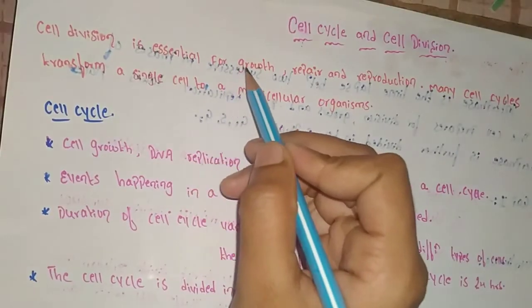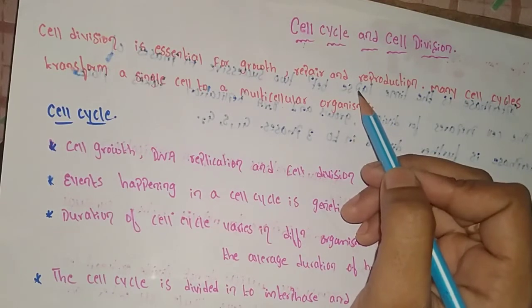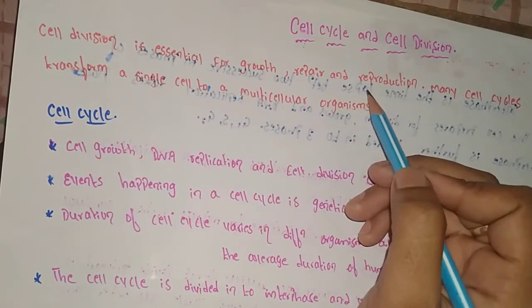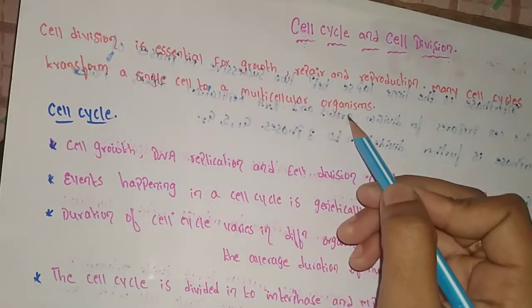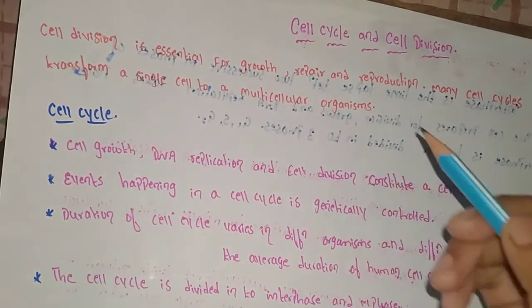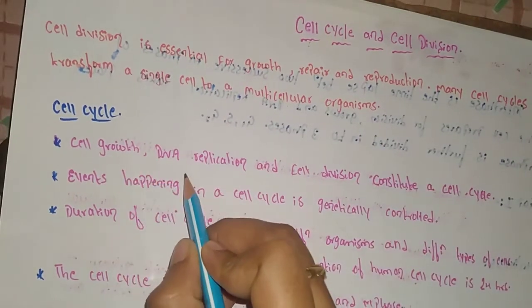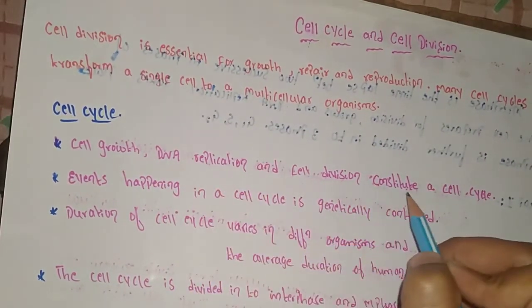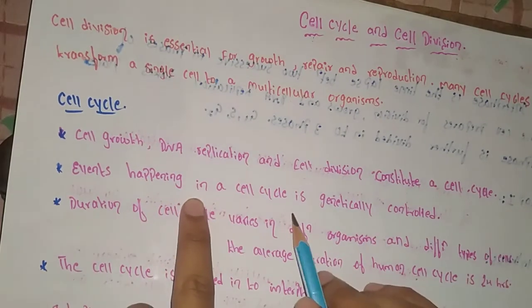Cell division is essential for growth, repair, and reproduction. Many cells transfer from a single cell to a multicellular organism. Growth, DNA replication, and cell division together constitute the cell cycle.